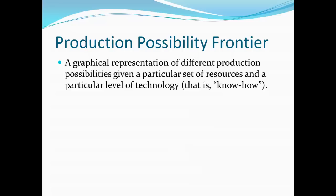First, in terms of definition, the production possibility frontier, or production possibility curve as it's sometimes called, is just a graphical representation of the different possibilities of things we could produce, different combinations, given a particular set of resources and a particular level of technology, that is, a particular level of technical know-how.